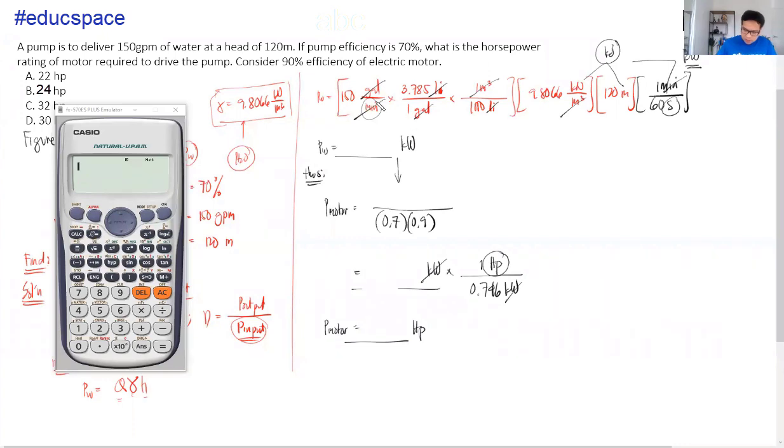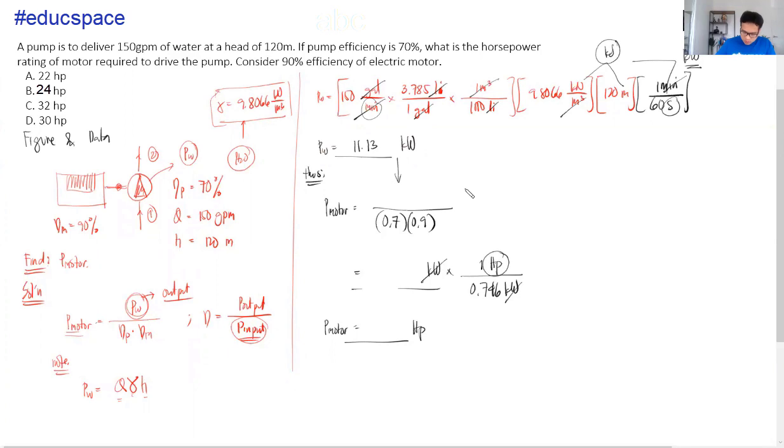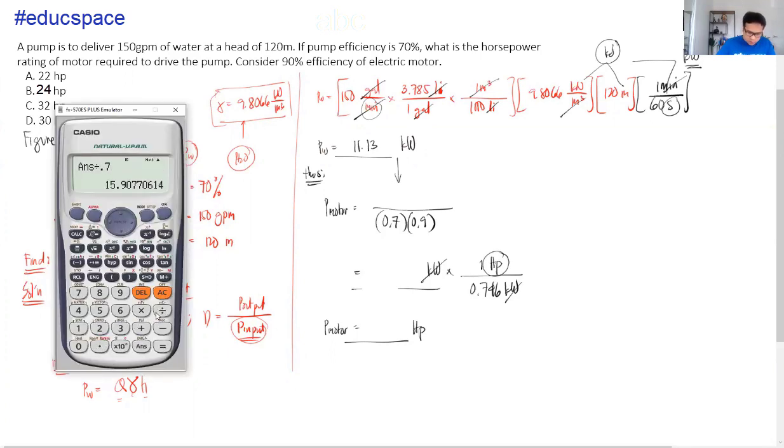And so, using yung ating calculator, we have, 150 multiplied by 3.785 multiplied by 9.8066 multiplied by 120, which is the head. 120 multiplied by, divide ko na lang ng 1,000. And then, we have to multiply this by 60. Equal sign. So, 11.13. 11.13 kilowatts. And then, over 0.7 divided by 0.9. 17. That's in here. 17.67. Tapos, convert pa natin into HP. So, divided by 0.746. Tayo dito. Call sign. So, 23.69 or approximately 24 HP.